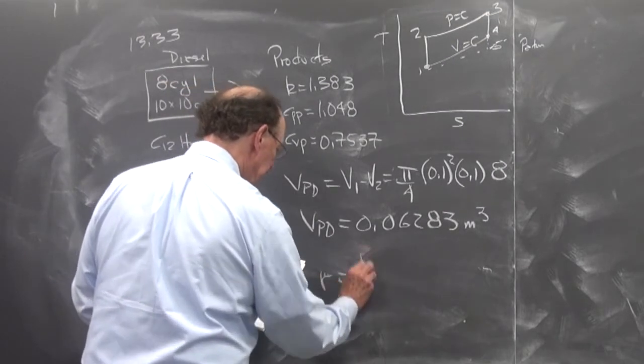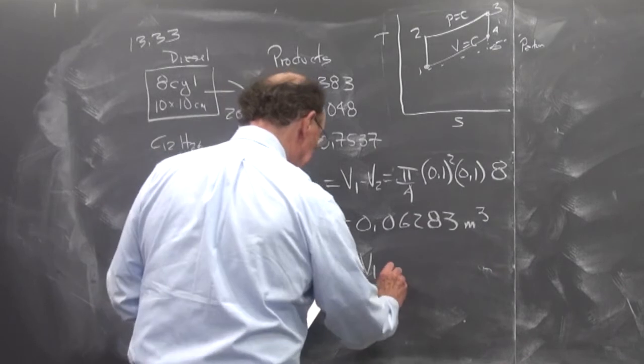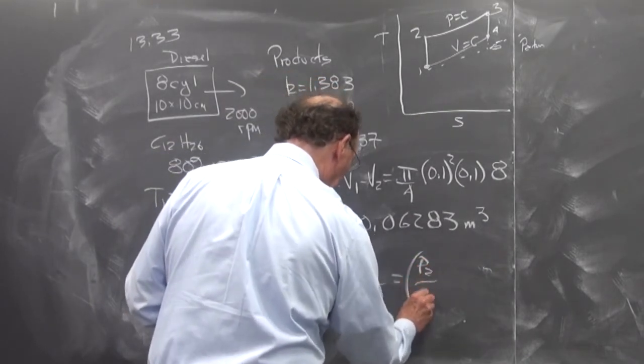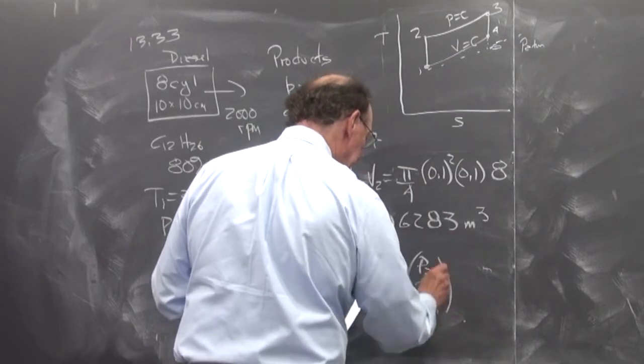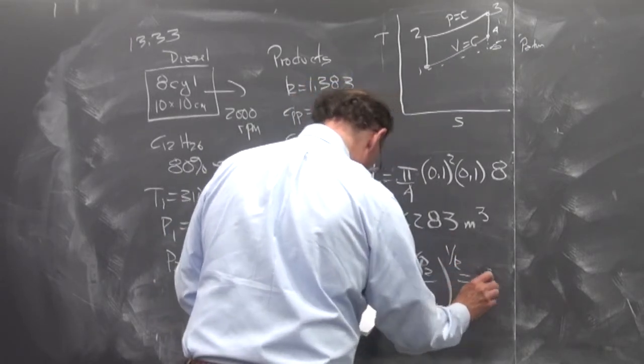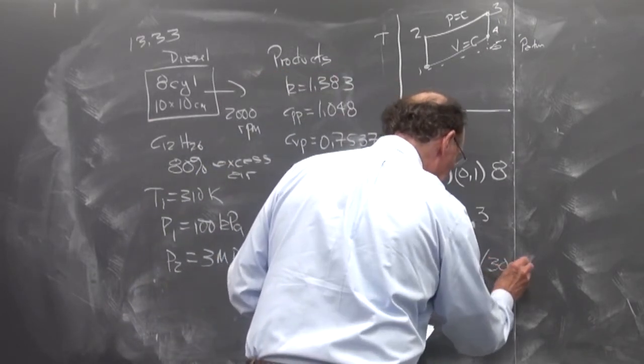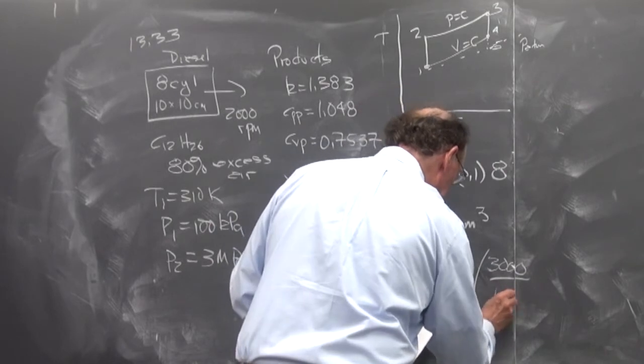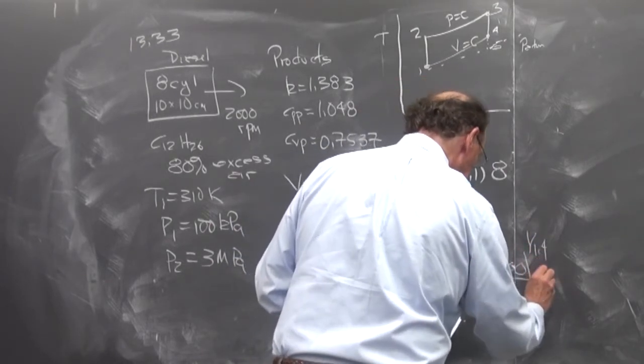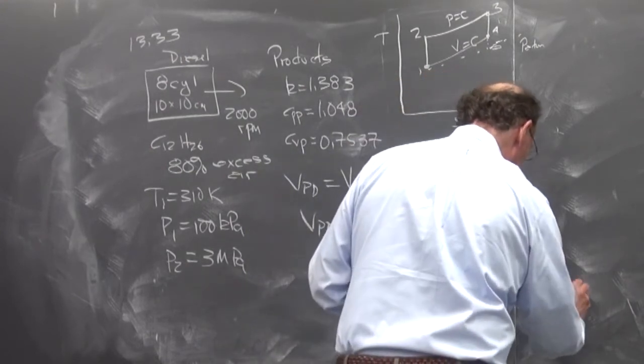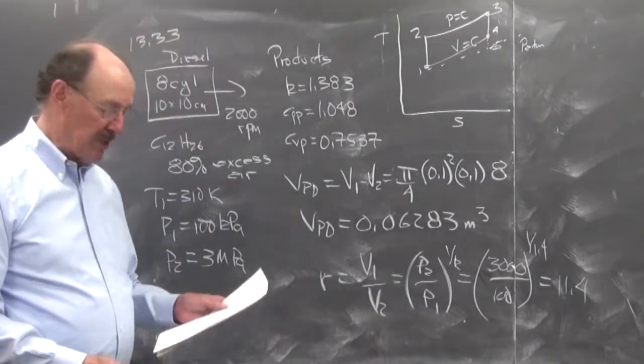R is equal to V1 over V2 is equal to P2 over P1 to the 1 over k. So that's equal to 3,000 over 100 to the 1 over 1.4, and that's equal to 11.4. So it's just a different way. Mostly you're given a compression ratio. In this case, that wasn't the case.